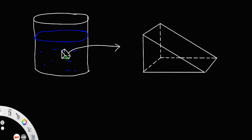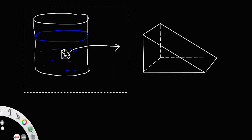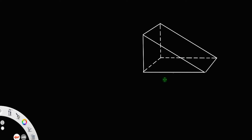We have to prove that the pressure on every face of this solid must be the same. For that, let us name all the vertices of this triangular prism. But before that, let us introduce axes: let this be the y-axis, this be the x-axis, and this be the z-axis.